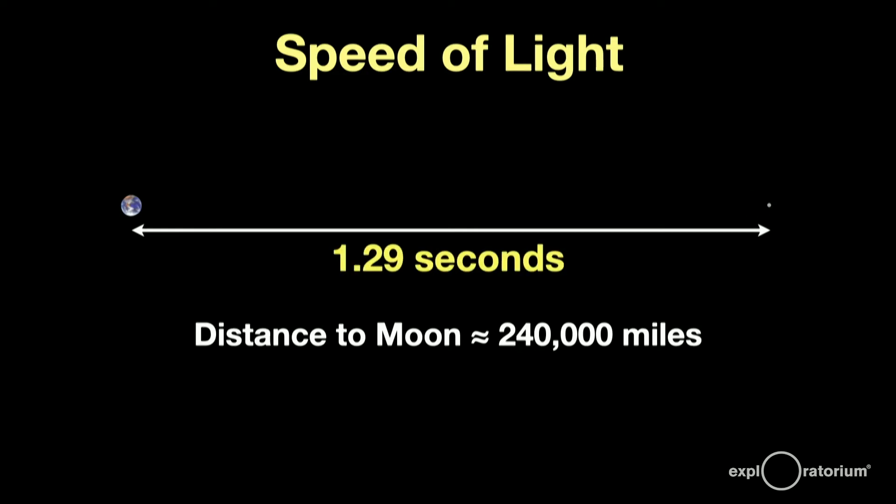Light takes only eight minutes to travel from the Sun to the Earth.